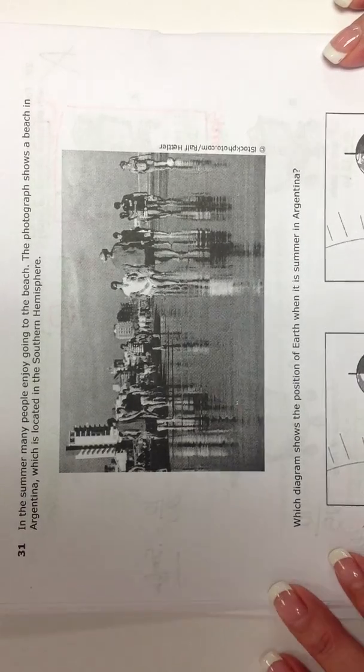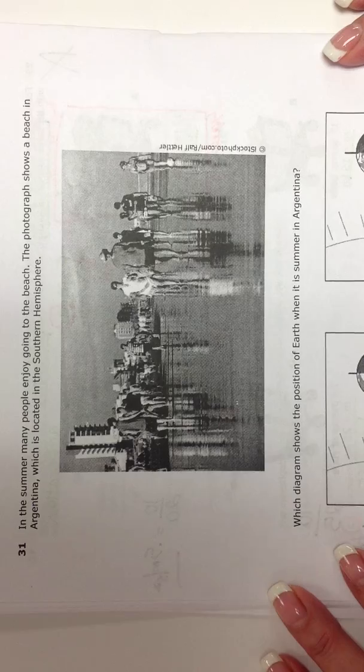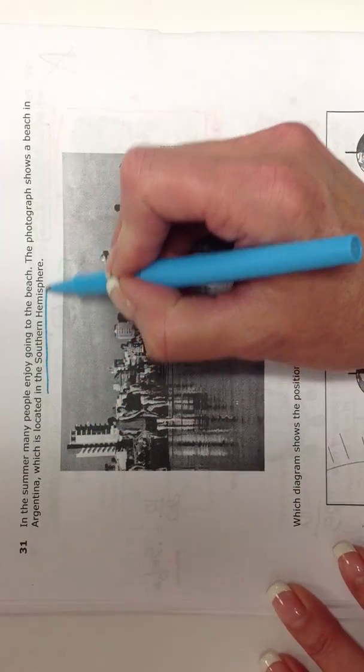Alright, this is question 31. It reads, in the summer how many, excuse me, in the summer many people enjoy going to the beach. The photograph shows a beach in Argentina located in the southern hemisphere.